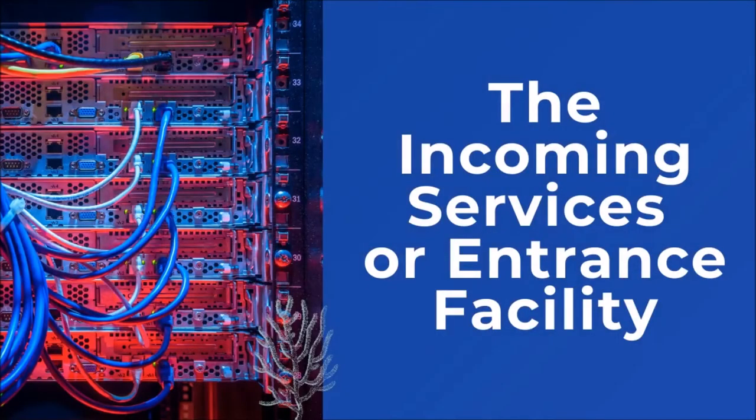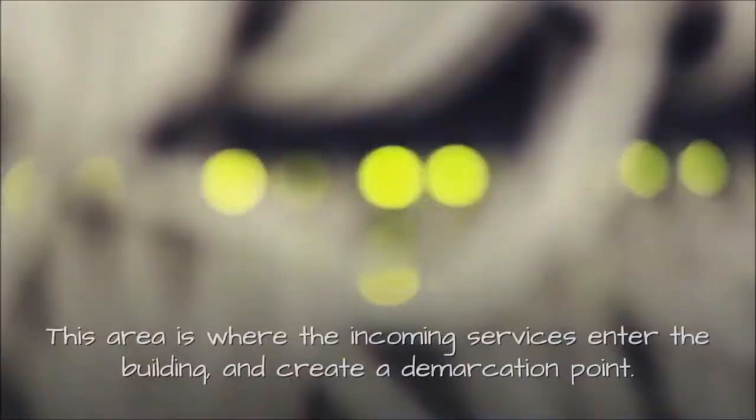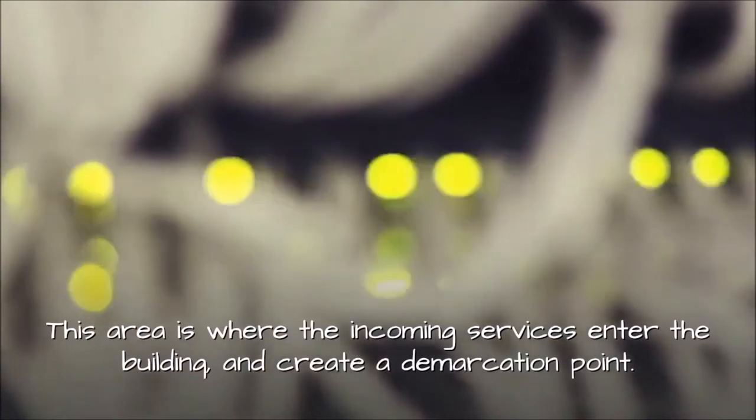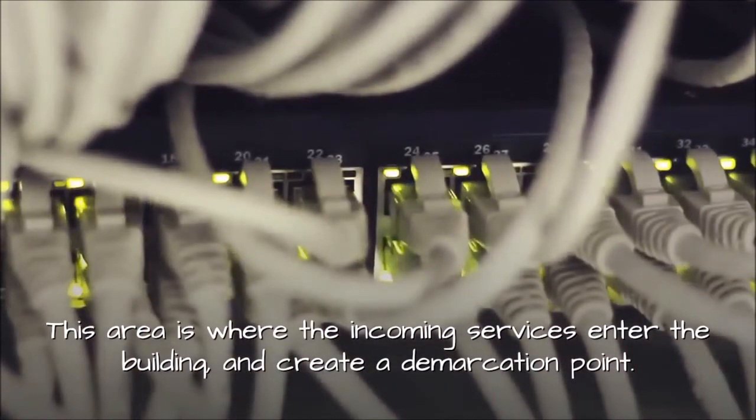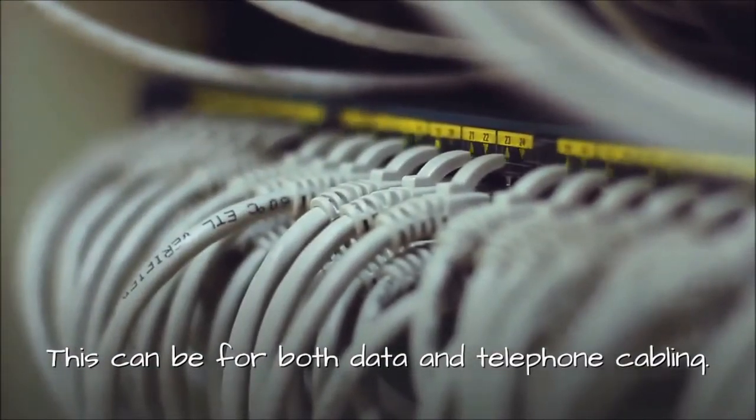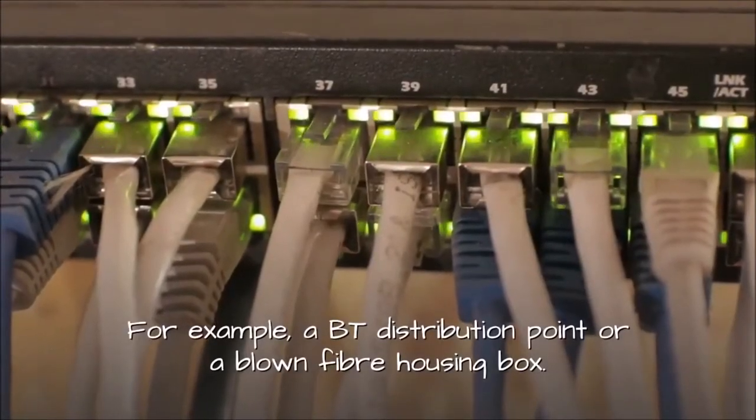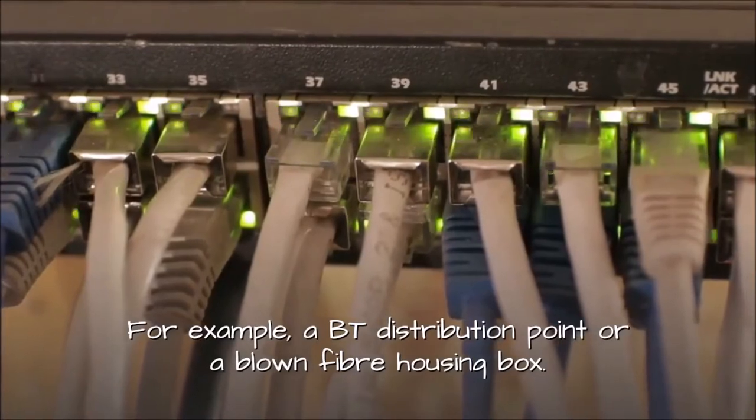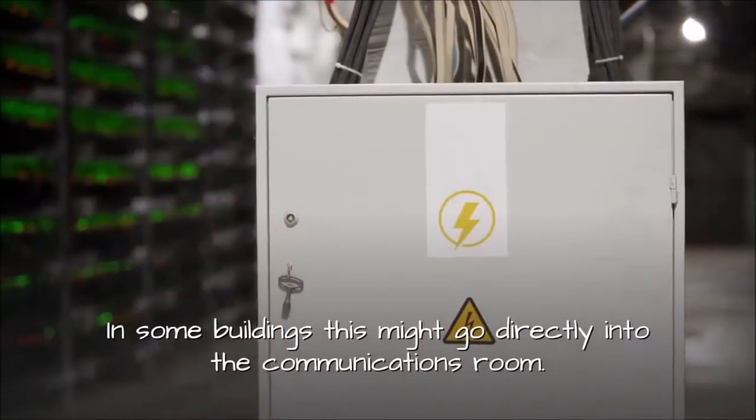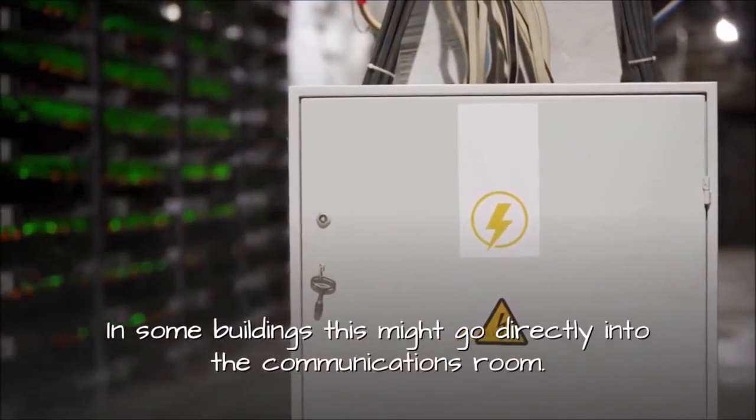The incoming services or entrance facility. This area is where the incoming services enter the building and create a demarcation point. This can be for both data and telephone cabling. For example, a BT distribution point or a blown fiber housing box. In some buildings this might go directly into the communications room.